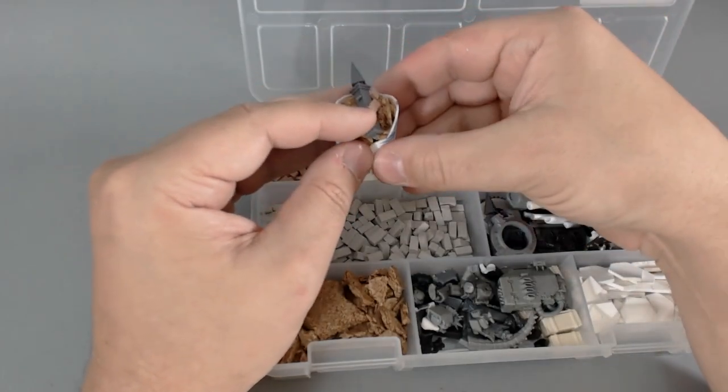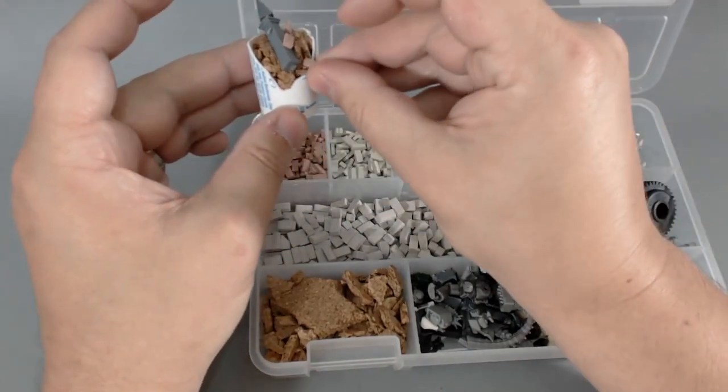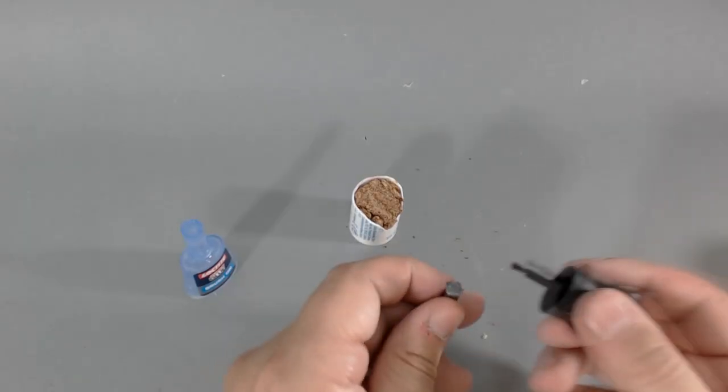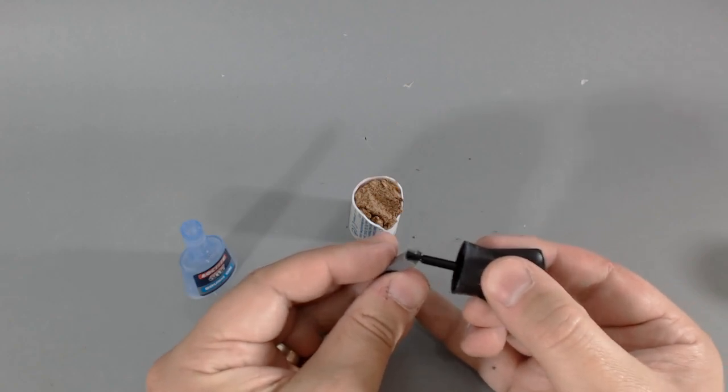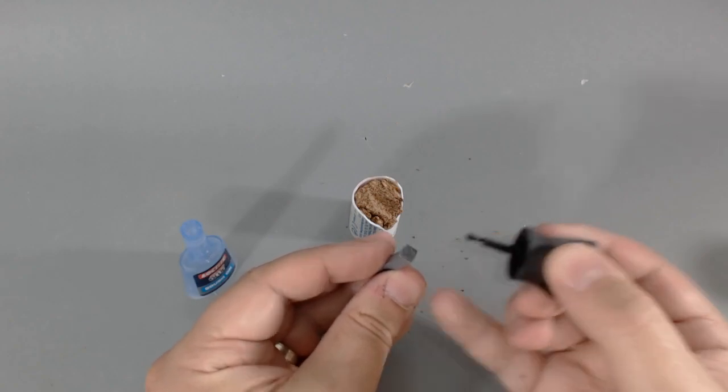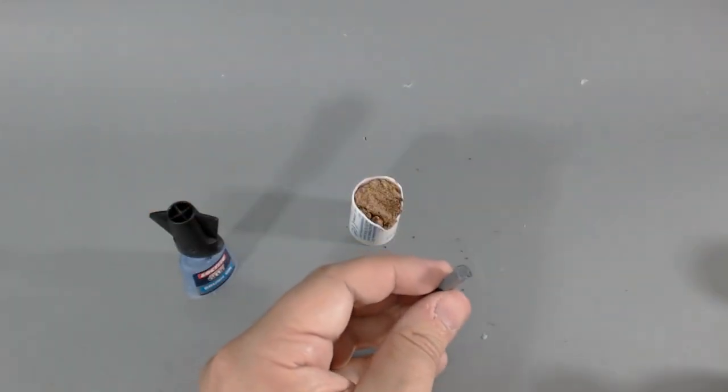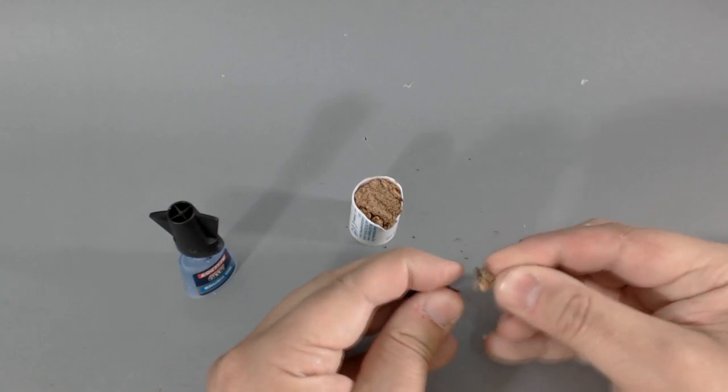Because if we put it in on the base as it is now, with the perfectly smooth flat bottom, it's going to look fake and out of place. So by gluing a little bit of cork to the bottom there, we're just going to make it look like there's some dirt and bit of concrete that was used when it was set into the ground.